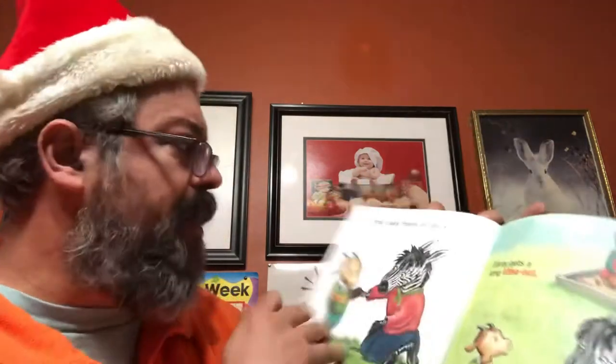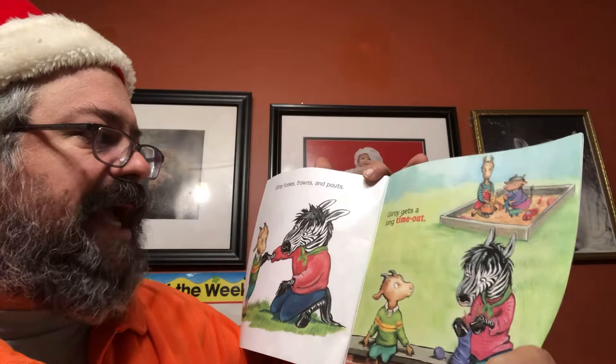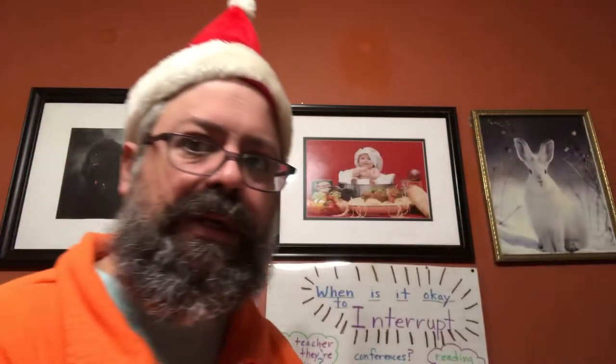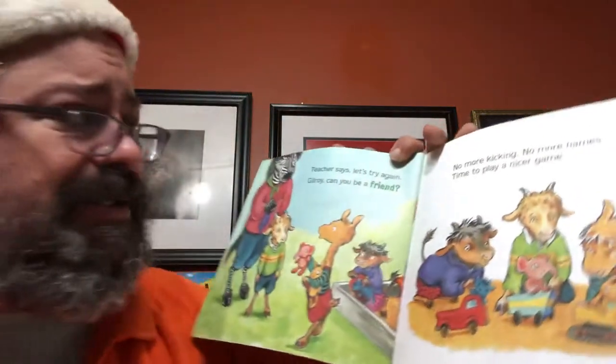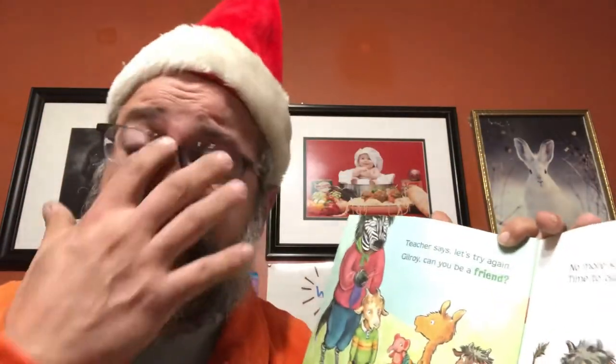'Being bullied is no fun — walk away.' They're just ignoring him, and sometimes you have to do that and tell someone. 'Gilroy fusses, frowns and pouts — Gilroy gets a long time out.' That's when you sit on the side and watch how nicely everyone else plays, so you can learn how to play that nicely too. 'Teacher says let's try again.' Teachers and parents always love giving kids lots of chances to make the right choice.